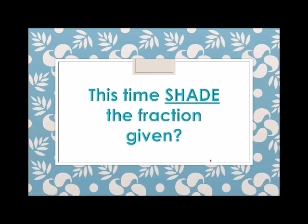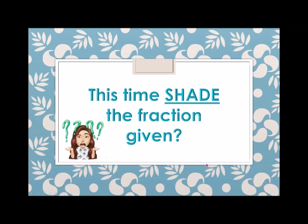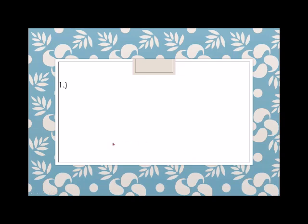This time, shade the fraction given. So we are going to shade given a fraction. Number 1: we have 1 half and there is a circle. Therefore, the shaded part is 1, so we shade 1.